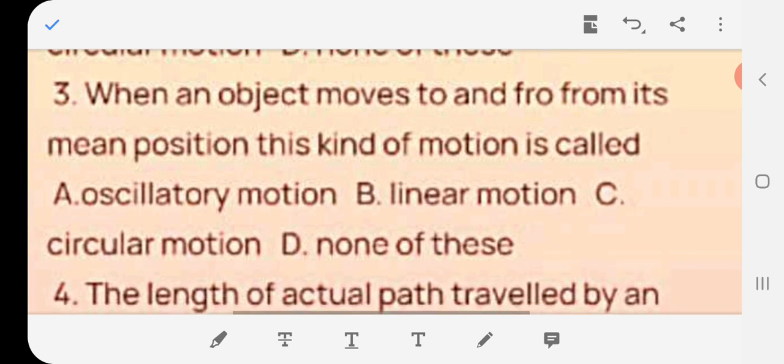When an object moves to and fro from its mean position, this kind of motion is called A oscillatory motion, B linear motion, C circular motion, D none of these. The correct answer is A oscillatory motion.